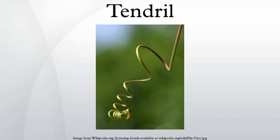Still others use the rachis of a compound leaf as a tendril, such as members of the genus Clematis. The specialized pitcher traps of Nepenthes plants form on the end of tendrils.